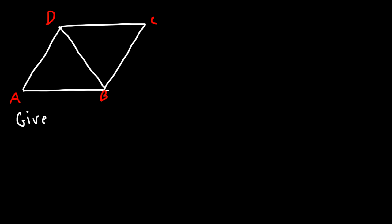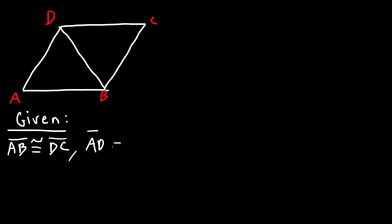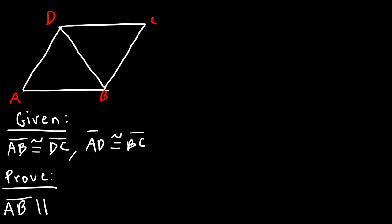We have a quadrilateral with vertices A, B, C, and D. In this problem you're given that AB is congruent to DC, and also that AD is congruent to BC. Using that information, prove that segment AB is parallel to DC. Go ahead and try this problem — feel free to pause the video. Now let's make a two-column proof with statements and reasons.